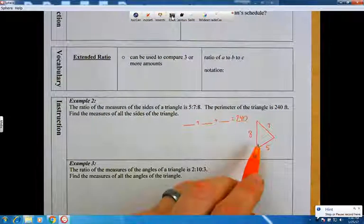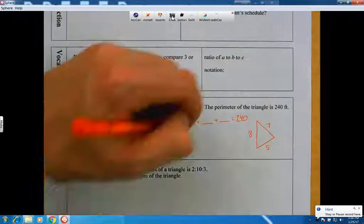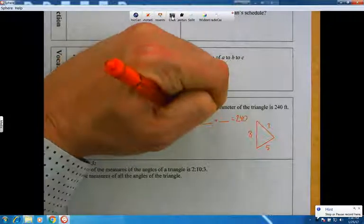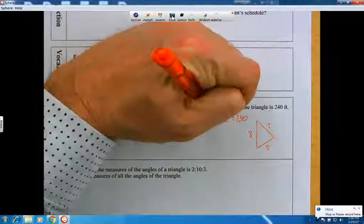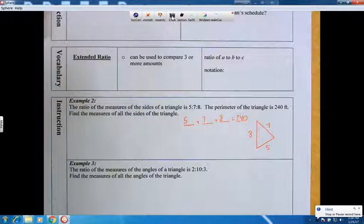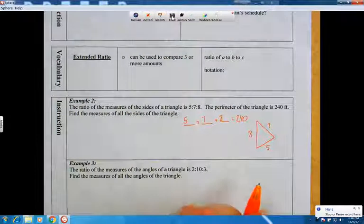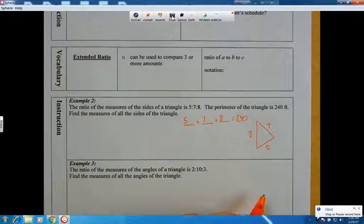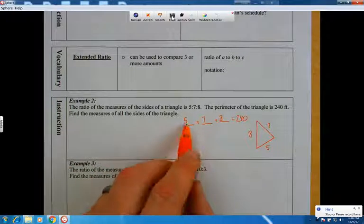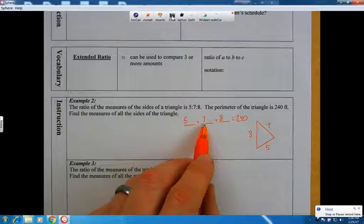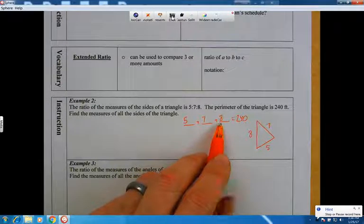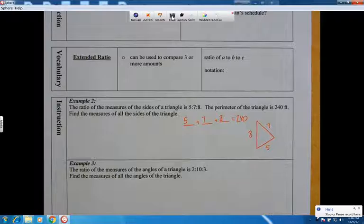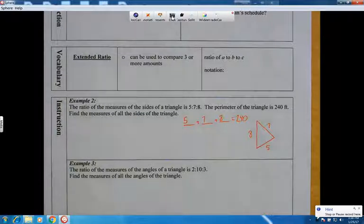Now I could put a 5 and a 7 and an 8 right here, and I'm going to, because those are on the sides of the triangle. But when I do that, something kind of strikes me. And that's that 5 plus 7 is 12, 12 plus 8 is 20, and that's not even close to 240. So something's going on there.